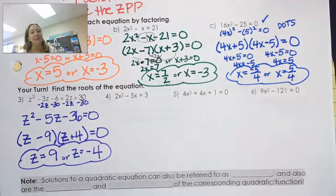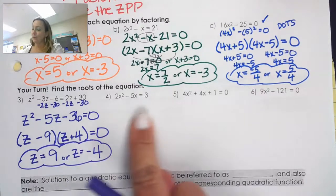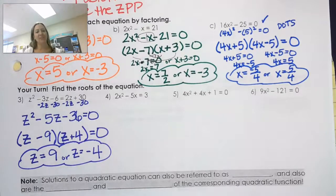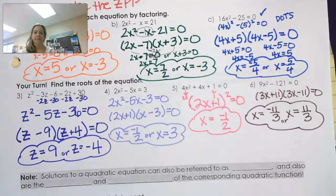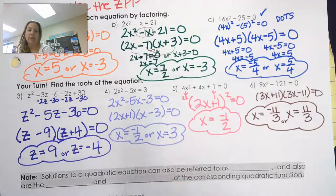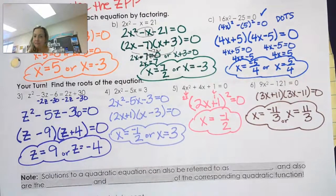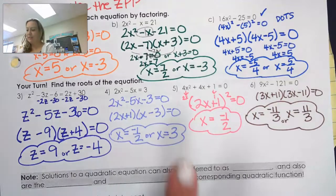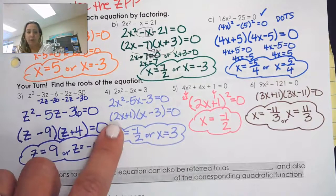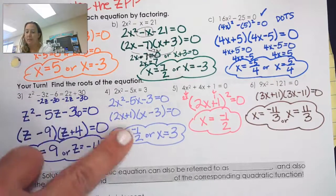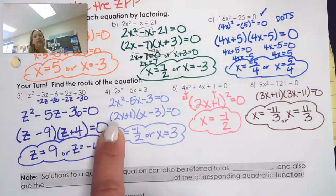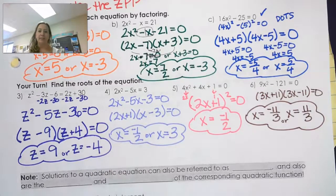Pause the video and try numbers 4 through 6. In number 4, you should start by subtracting 3 to get one side equal to zero, then factor as (2x + 1)(x - 3) = 0. One common mistake: don't just change the sign to get x = -1 — you must compensate for the coefficient. You have to subtract 1 and divide by 2 to get x = -1/2.